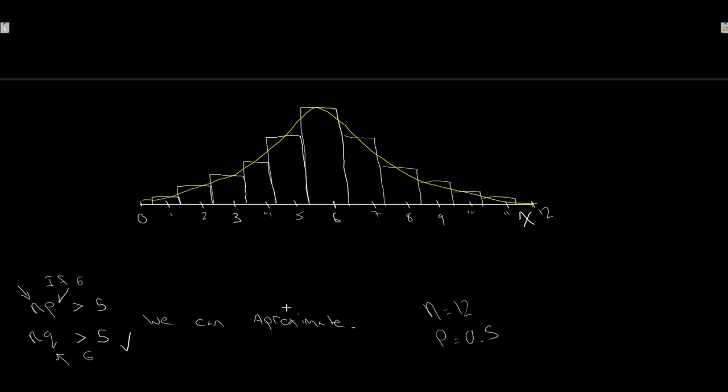We can approximate our binomial results by using the normal, converting x to a z, and finding the probability underneath the curve. With an n of 12 it might be easier to just use the binomial, but with n equals 120 or 1200, the normal becomes much easier to use. The approximating normal has a mean right at 6 — which is the mean of our binomial, since the mean of a binomial is simply n times p. So the normal shares the binomial's mean.